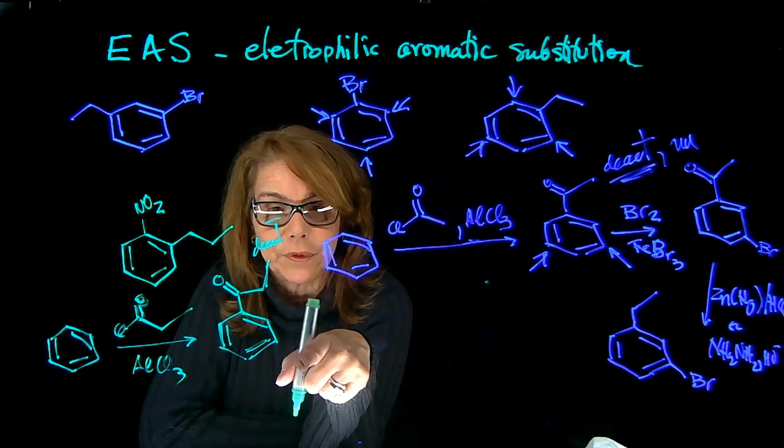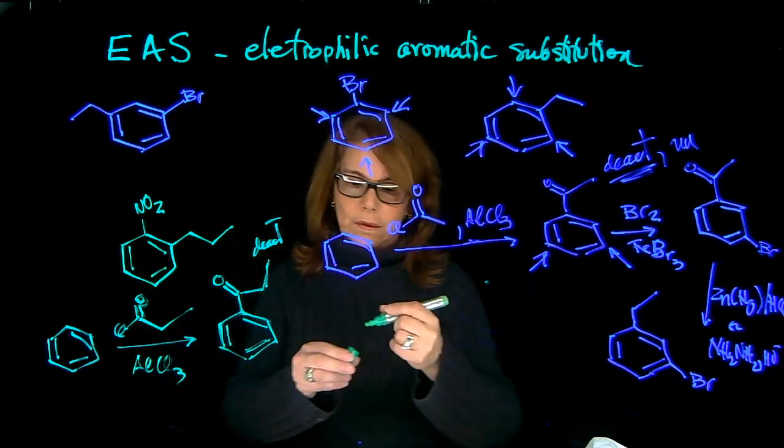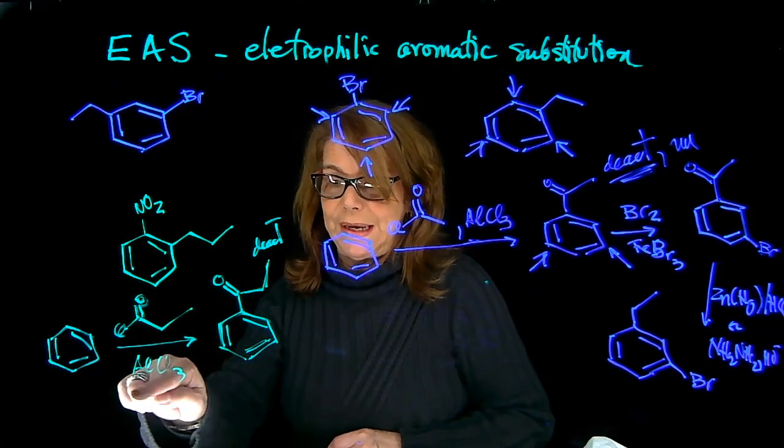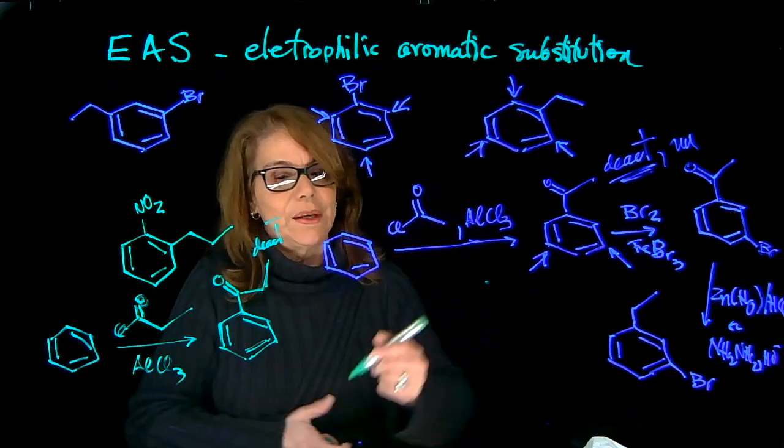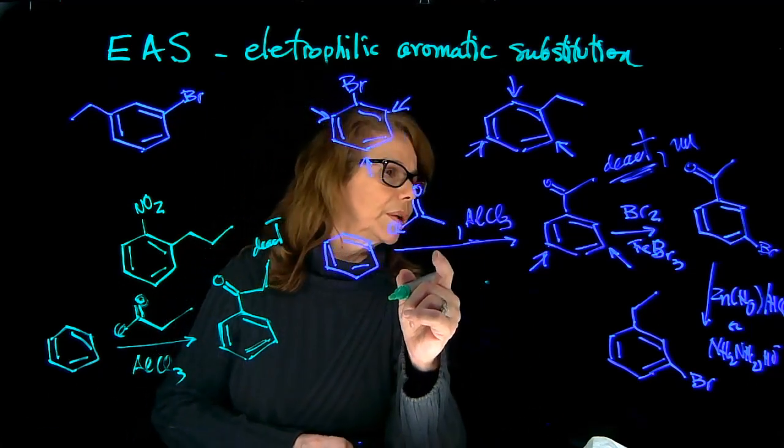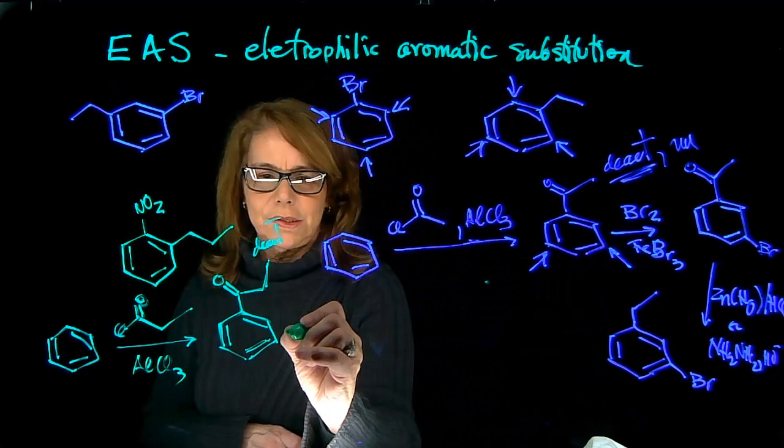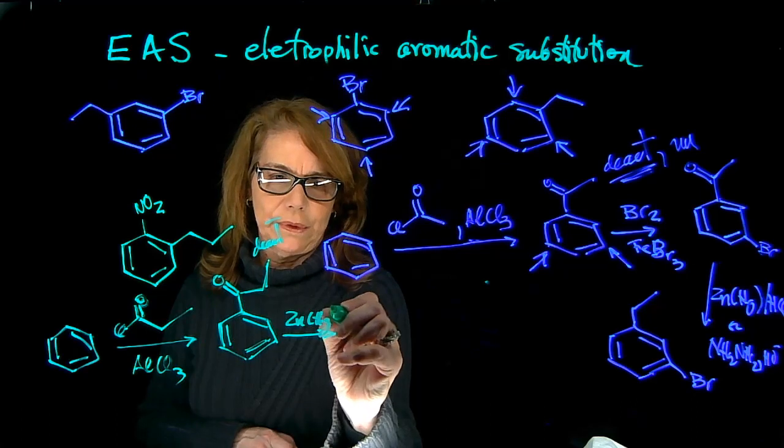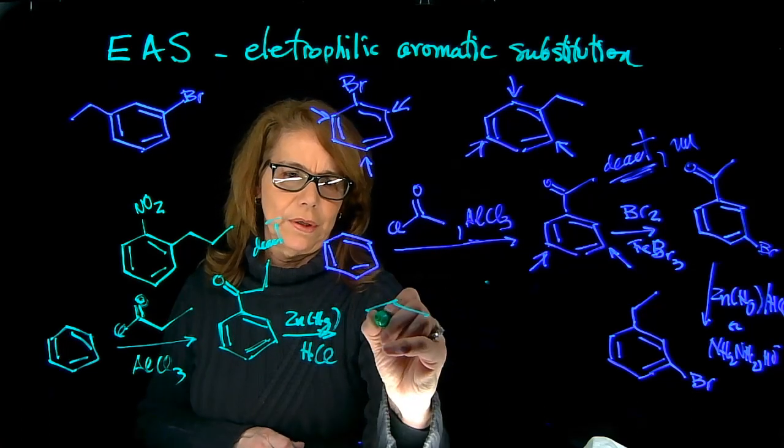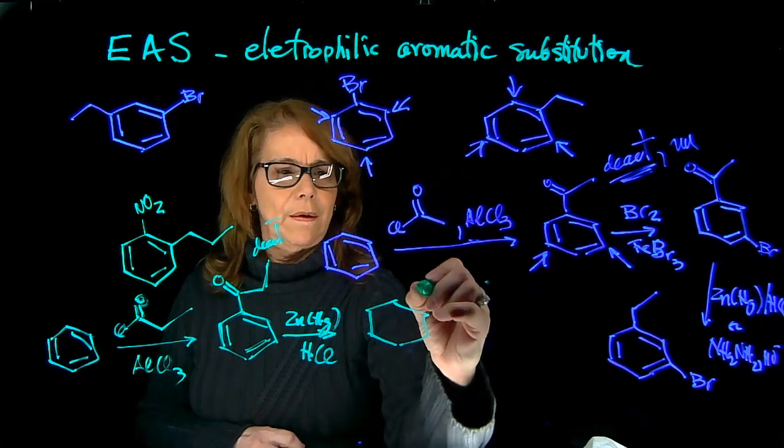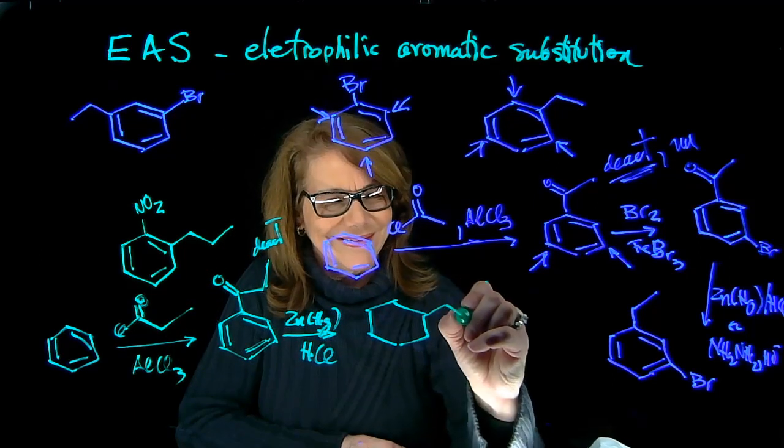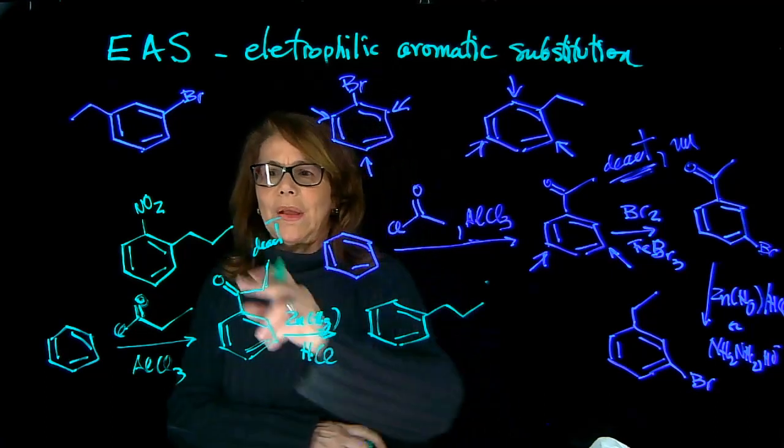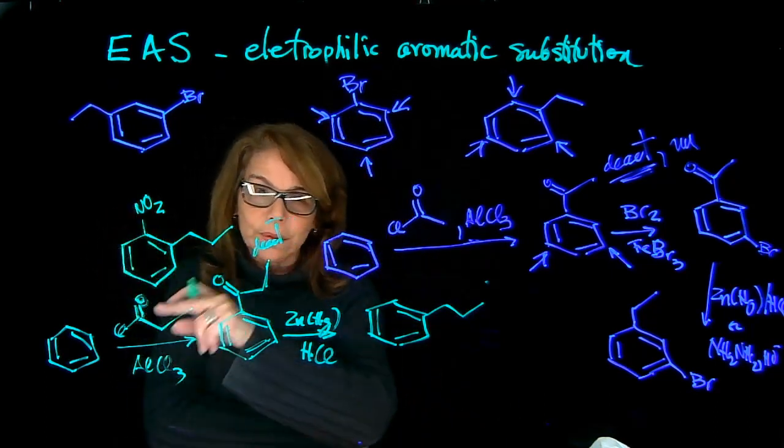One more step that I need to do is first, following the acylation, I need to do the reduction. And that's what we did before here. So if I do Clemmensen reduction, zinc, mercury, and HCl, now I'm going to have this group, the propyl group. Now I only want the ortho product.